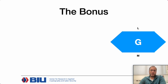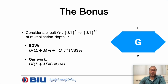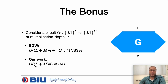As a bonus, consider a circuit G that has L inputs and M outputs of multiplication depth 1—in other words, a polynomial of degree 2. Think of G as large while L and M are relatively small. BGW requires VSSs proportional to the size of inputs and outputs of G plus something depending on the circuit size. In our protocol, we can securely compute such a circuit with VSSs proportional only to the input and output size, completely independent of the number of multiplications in G.